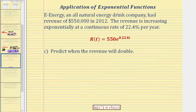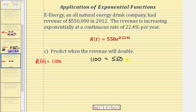For part c, we're asked to predict when the revenue will double. The starting revenue is 550,000, which in our function is 550, so the revenue doubles when the function value is twice 550, which is 1,100. We set r of t equal to 1,100 and solve for t, giving the equation 1,100 equals 550 times e raised to the power of 0.224t. If you haven't learned logarithms yet, we can solve this graphically by setting the right side equal to y1 and 1,100 equal to y2, graphing both, and finding the intersection.